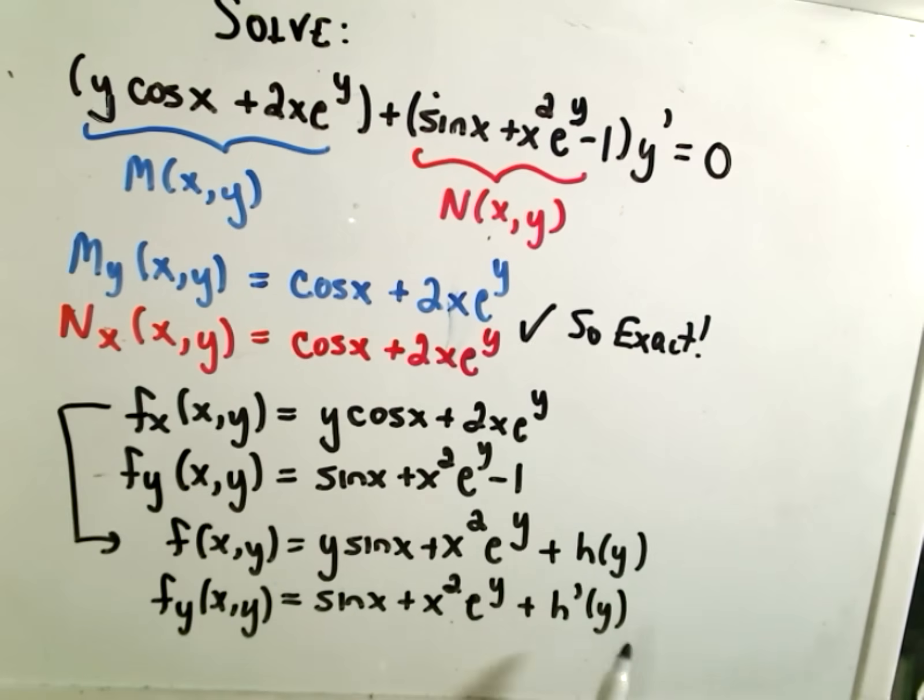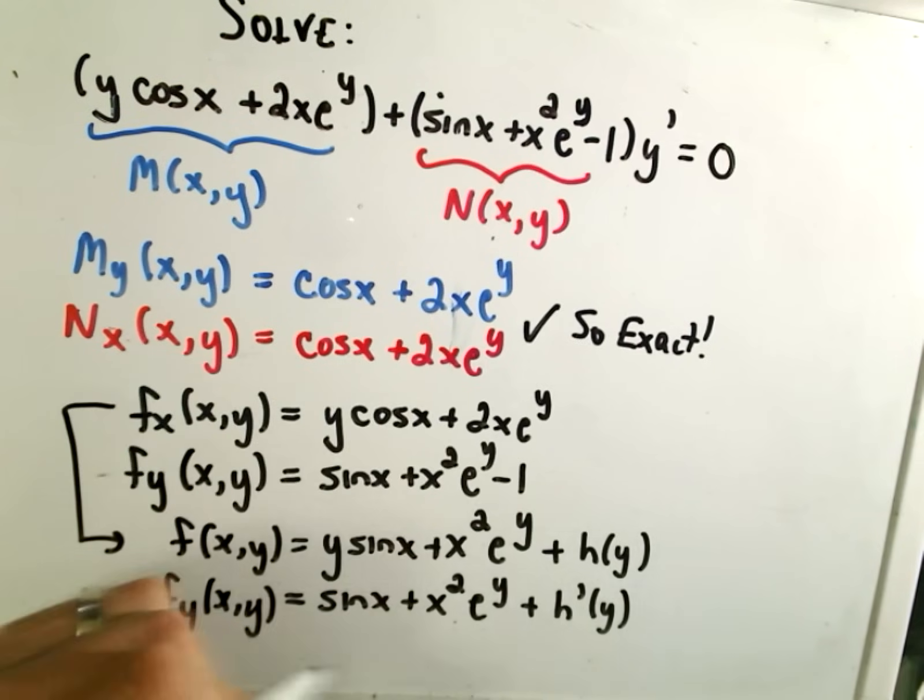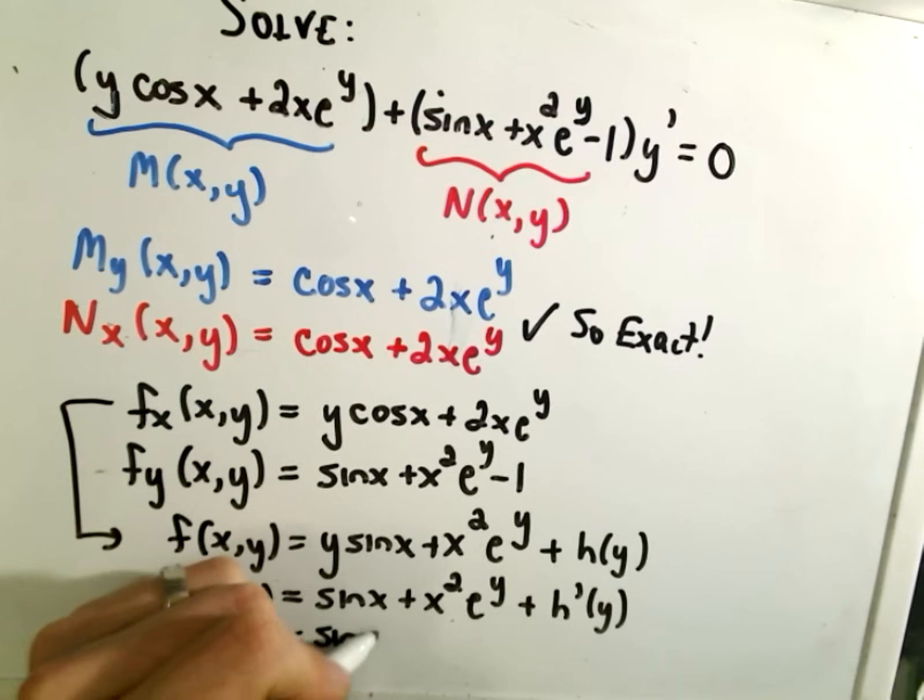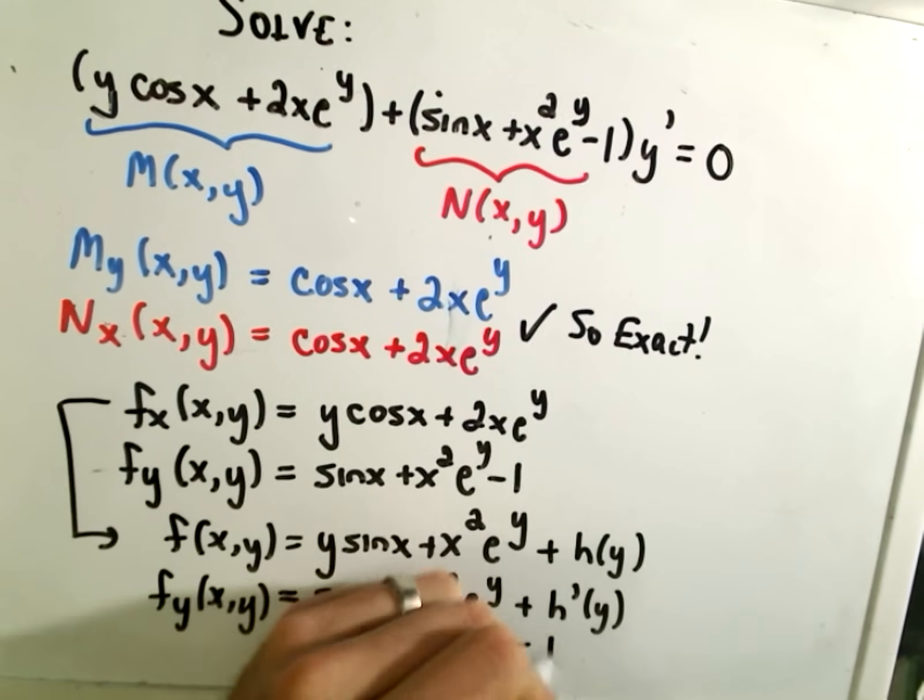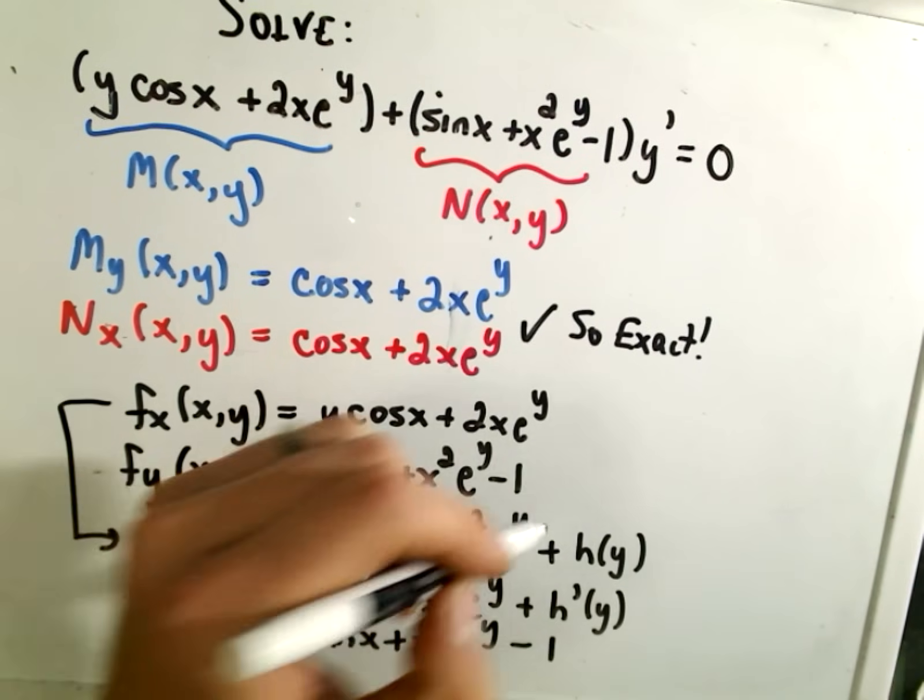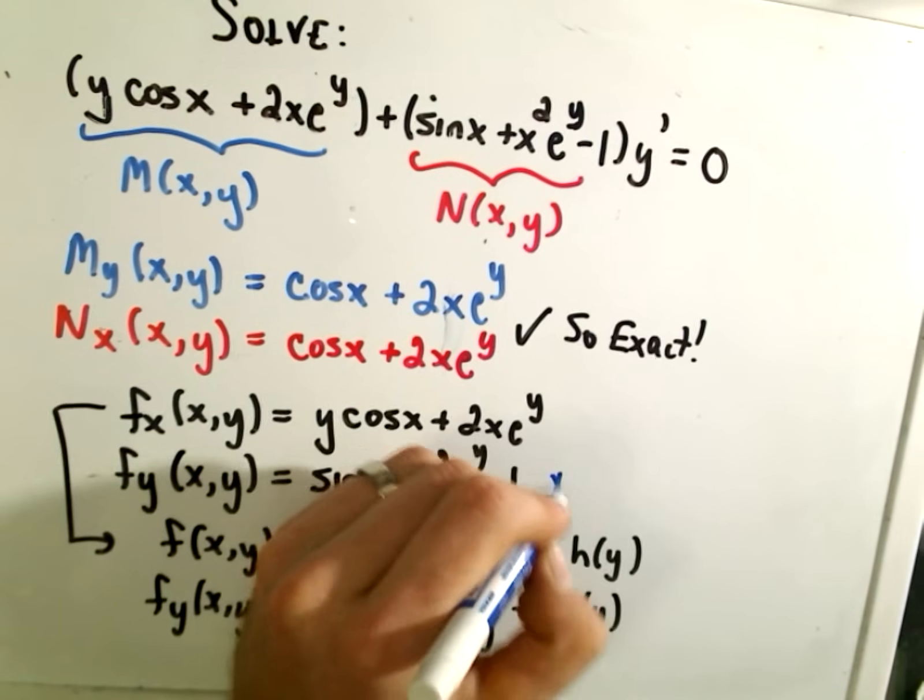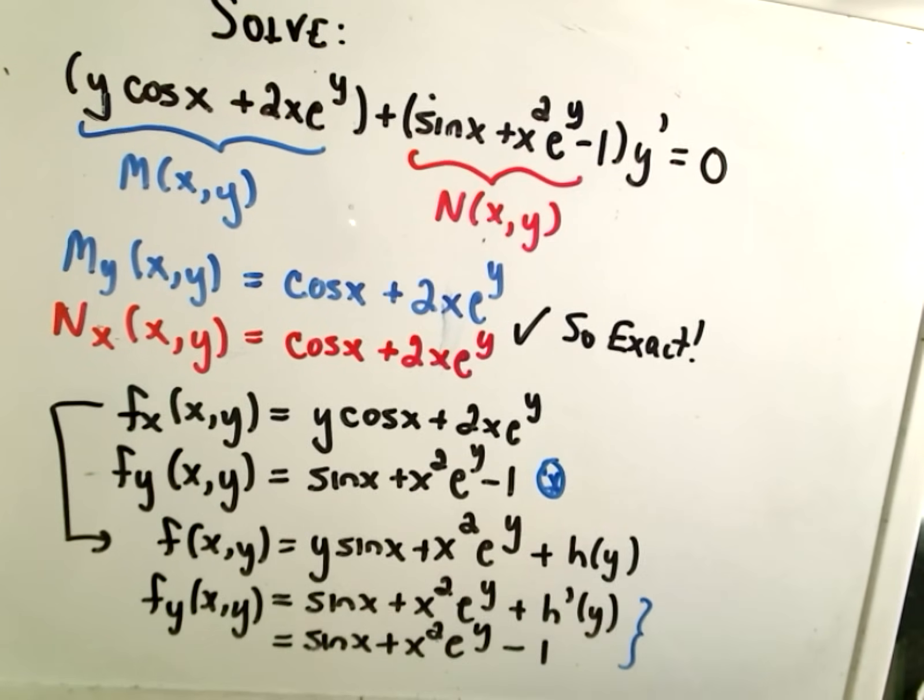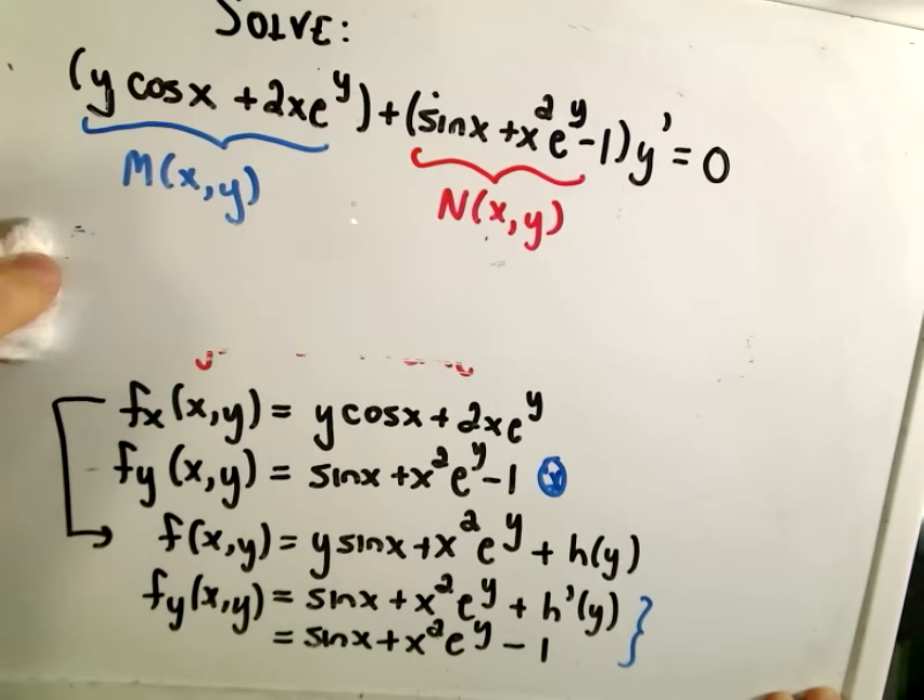And recall that we now know that this function has to equal the N part, which is sine x plus x squared e to the y minus 1. Okay, so now I'm just using this condition on this part. So what does that tell us? Well, it tells us what h prime of y is.